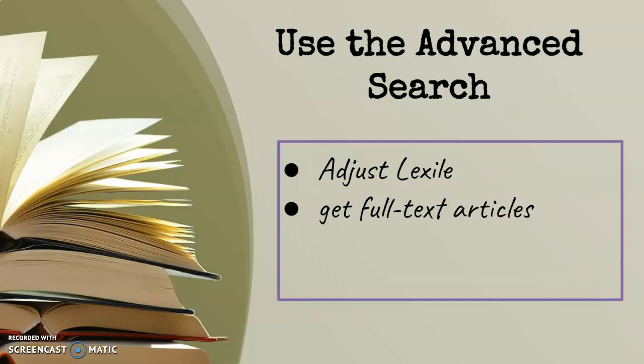You will want to use the advanced search. You can adjust Lexile — that's your reading level. If you're having trouble reading through some of the articles, which can be very high reading level, you can adjust it a little bit lower. You also want to make sure you are asking for full text articles, so the whole article pops up rather than just a reference telling you to find it in a magazine you don't have.